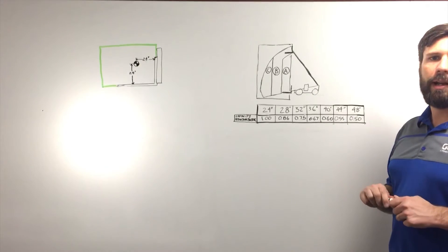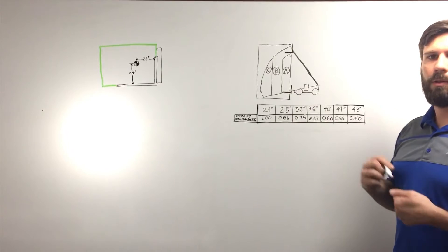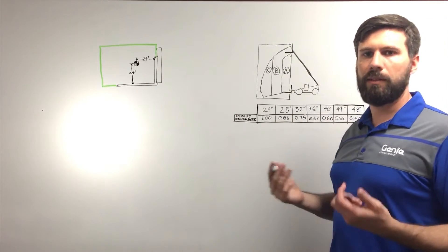I know that the load I need to pick and place needs to go in zone B. So the capacity in zone B is 6,000 pounds.